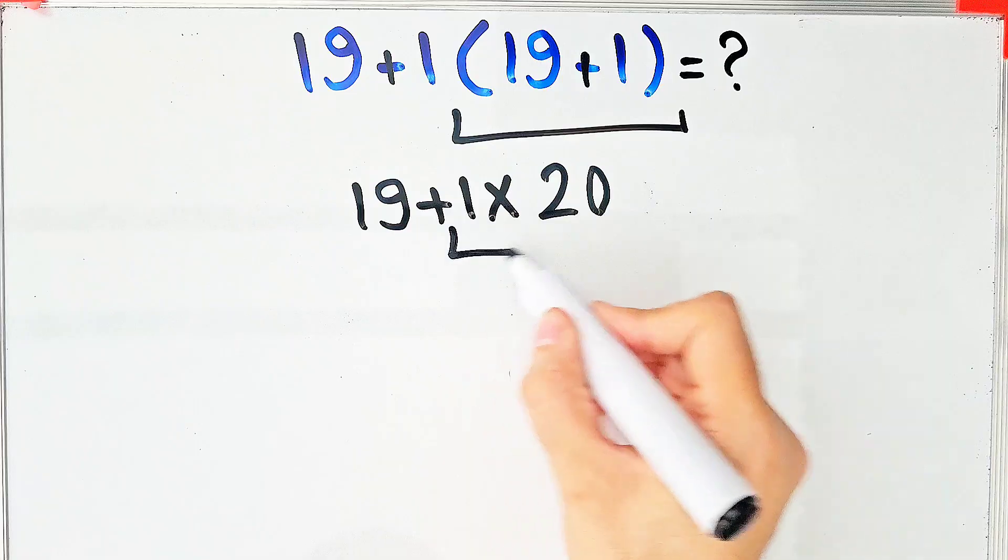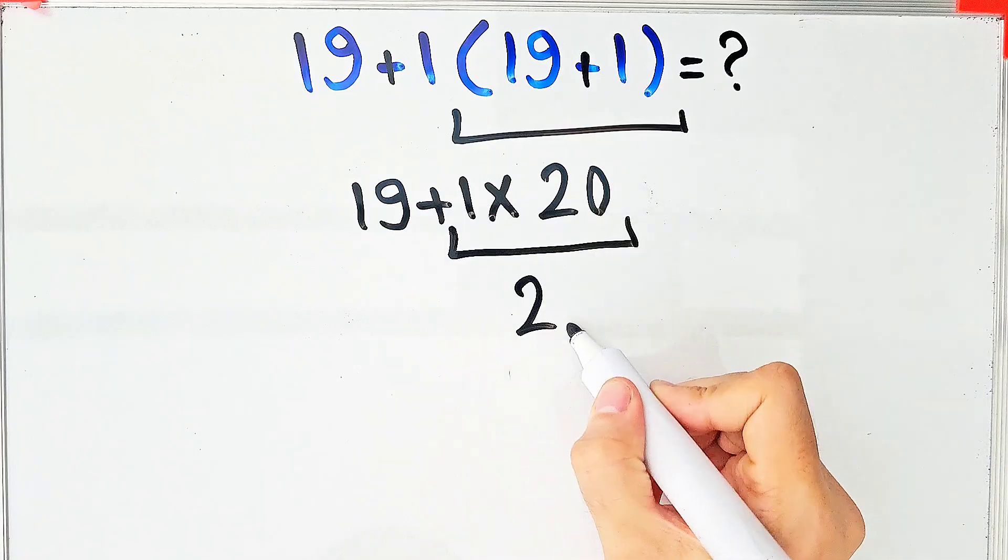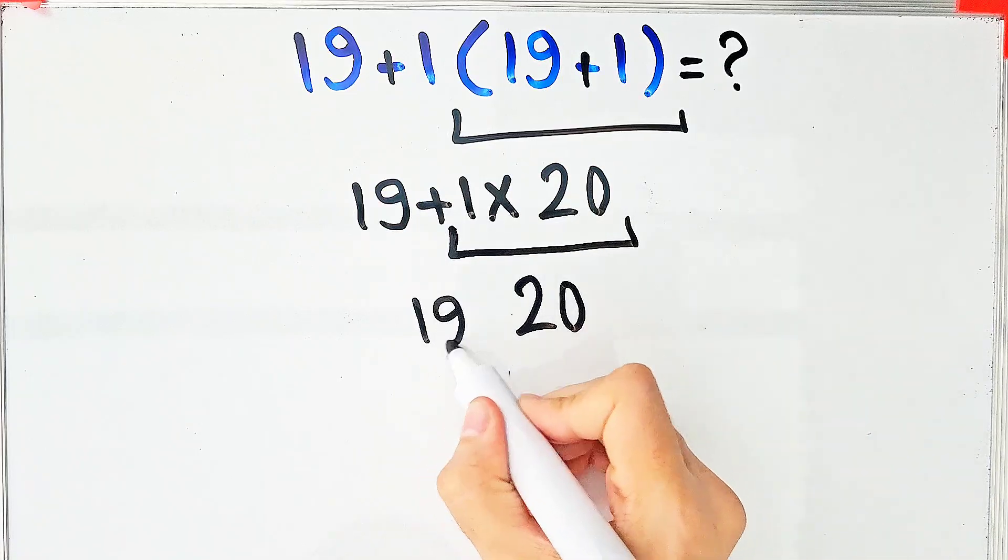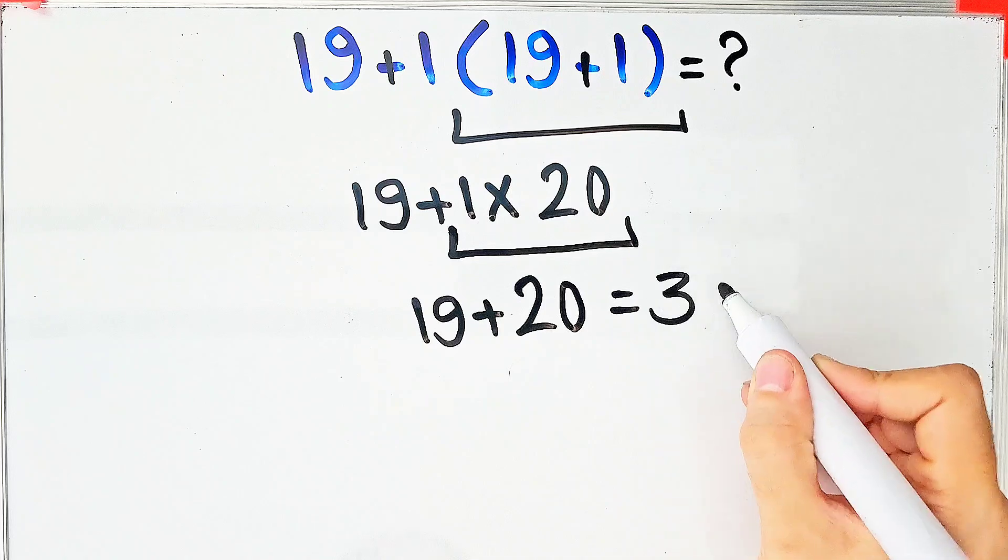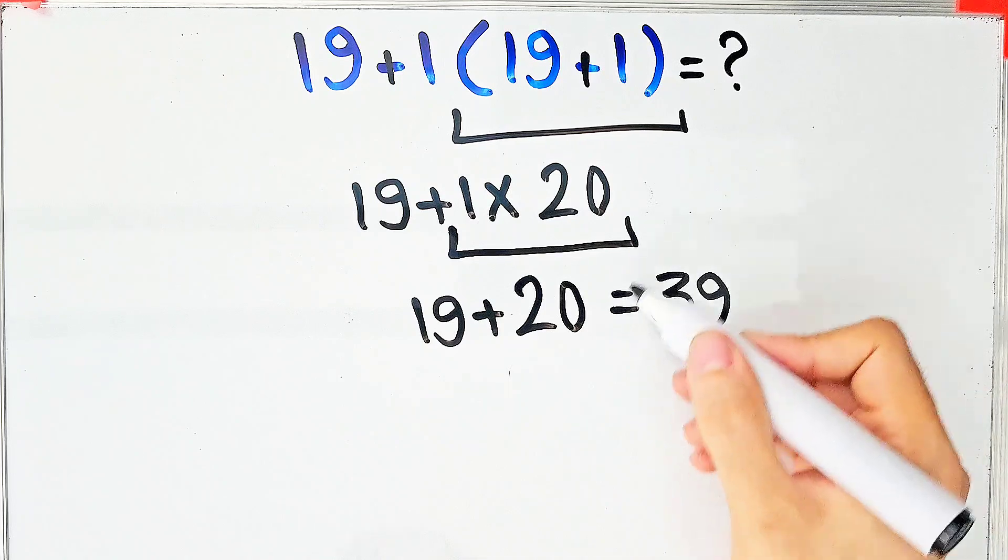Now we do this multiplication. 1 times 20 equals 20. And 19 plus 20 equals 39. The final answer of this question equals 39.